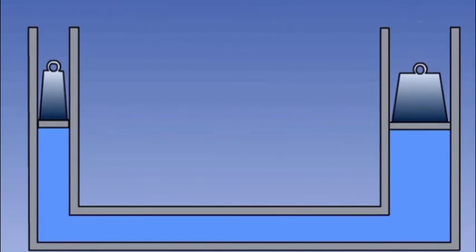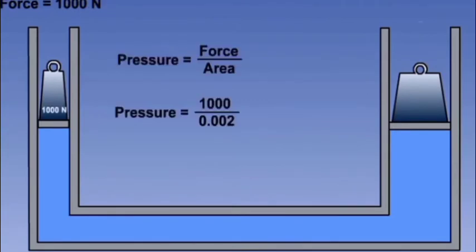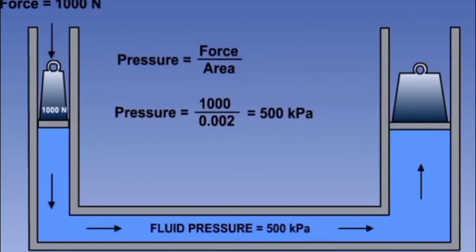Secondly, he observed the larger the area under the pressure, the greater will be the load available. In our example, we take a piston with an area of 0.02 meter square and apply a force of 1000 newtons to it. The pressure will be 1000 divided by 0.02, which is approximately 500 kilopascals.